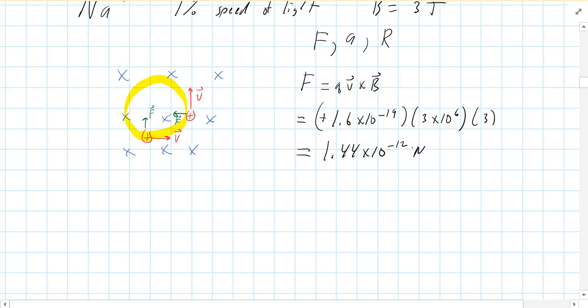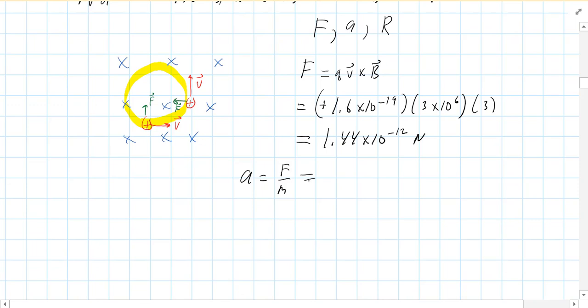Now, it's a very tiny force because it's a tiny particle. So for the acceleration, that's force over mass. Newton's second law, force equals MA. We still use that. So our force is what we just got, the mass.